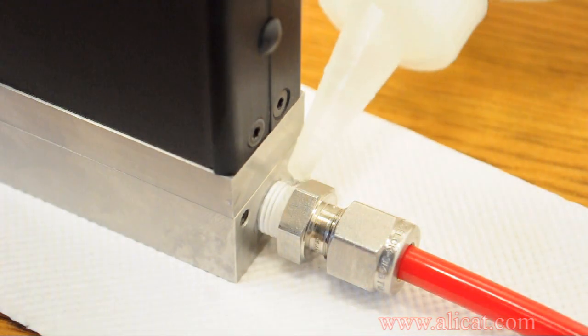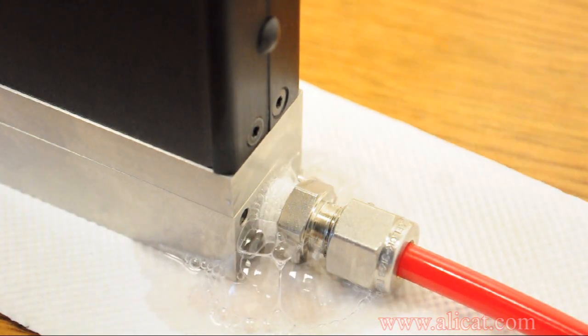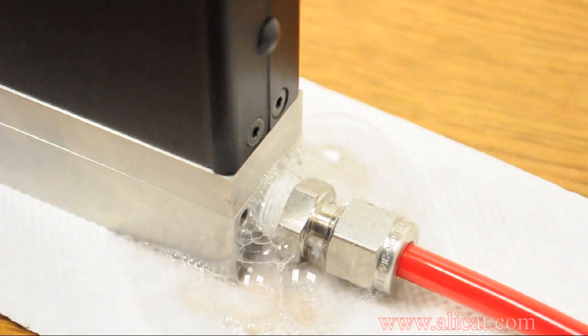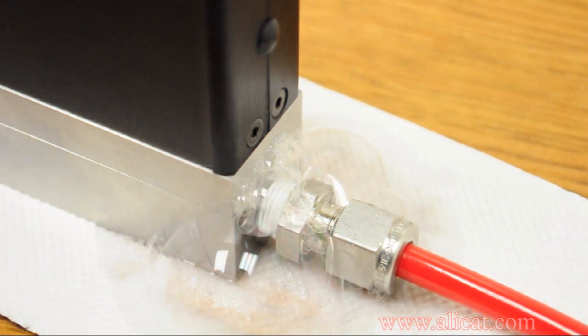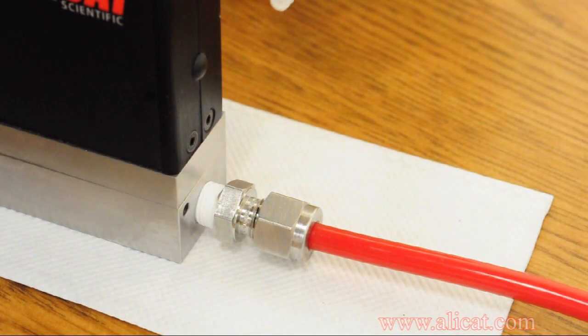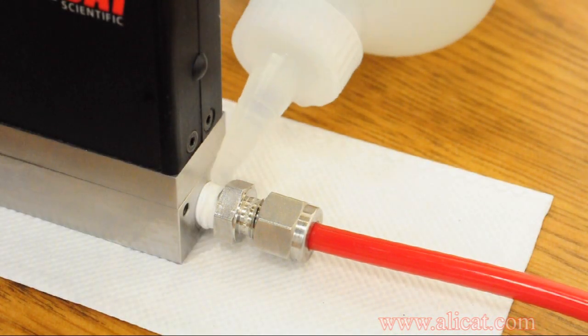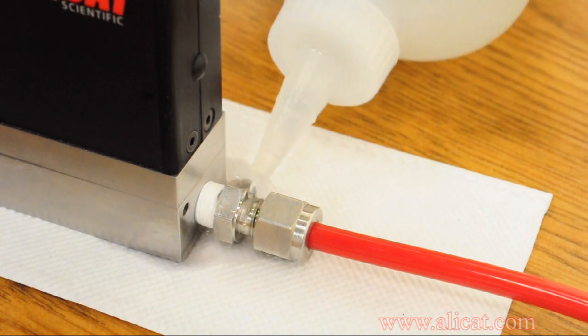Once all of the connections are made and the unit is pressurized, it is a good idea to check for leaks. Liberally apply a soap and water solution to the fitting area. Bubbles will indicate that a leak is present and must be dealt with. Once the adjustment has been made, retest the connection to make sure no bubbles are present under pressure.